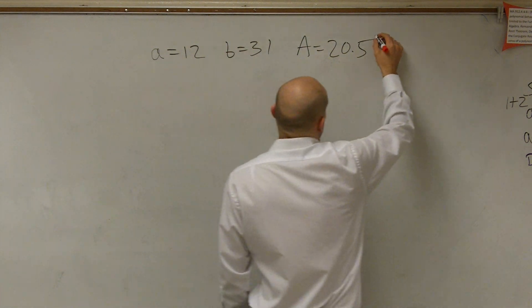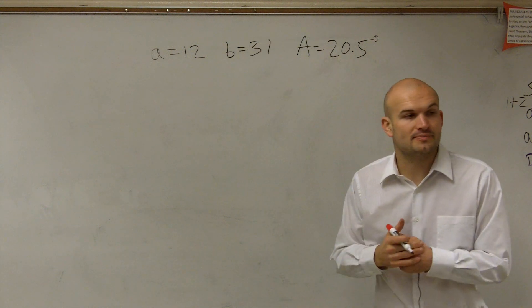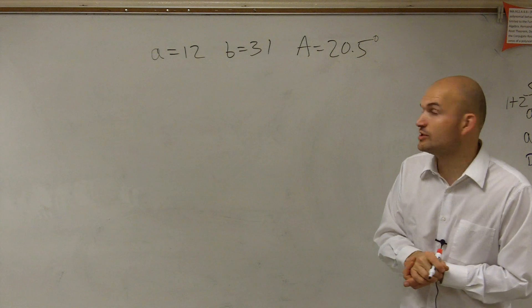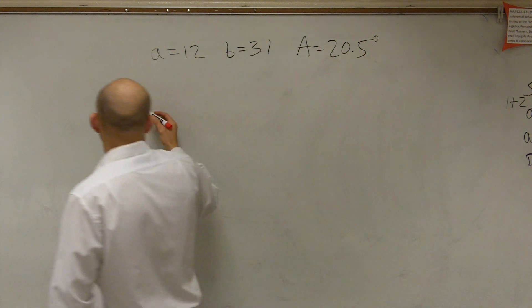So in this case, what we're going to work through is seeing all the possible solutions. We have a equals 12, b equals 31, and A equals 20.5 degrees.